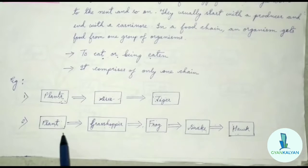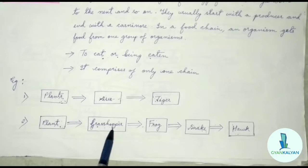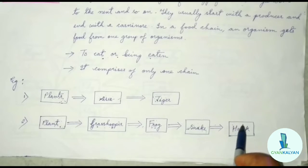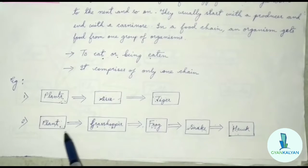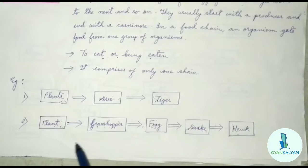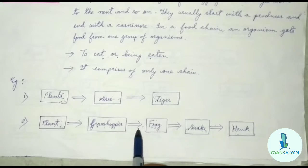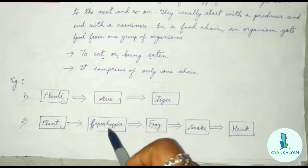In this example, grass is eaten by the grasshopper, the grasshopper is eaten by the frog, the frog is eaten by the snake, and the snake is eaten by the hawk — an eagle-type bird. So there is a flow of energy from one organism to another in only one chain, where energy transfers from one organism to the next. So the flow of energy from one organism to another and so on is called food chain. These are the examples of a food chain.